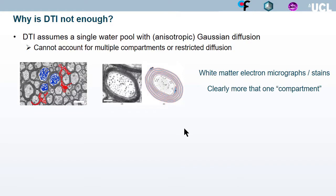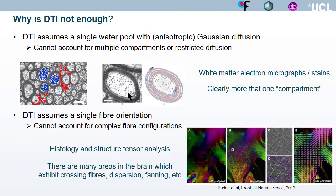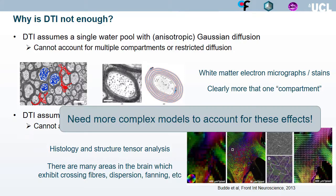Why is DTI not enough? DTI assumes a single water pool with possibly anisotropic Gaussian diffusion, so it cannot account for multiple compartments or restricted diffusion in the tissue, which we know is true if we look at micrographs of tissue. DTI also cannot account for complex fiber configurations such as crossing fibers, dispersion, and fanning, which are present in the brain, and cannot represent the measured data over a wide range of B-values. We really need more complex models to account for these effects.